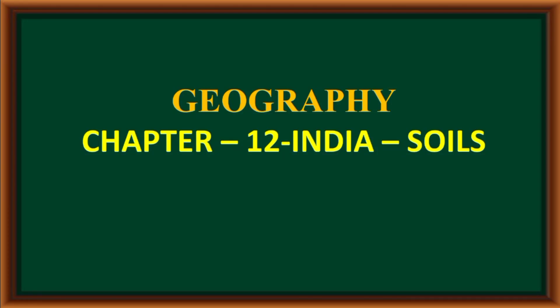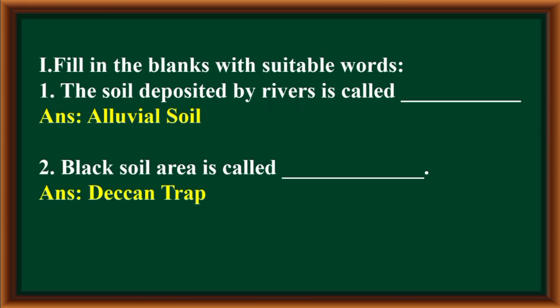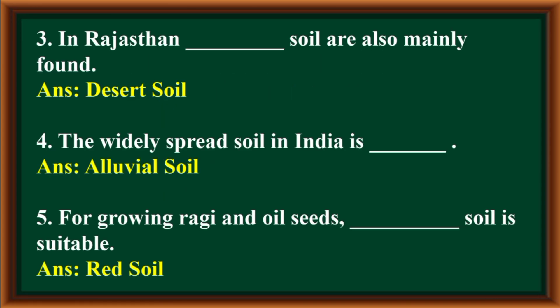Class 10 Standard Social Science Geography, Chapter 12: India Soils. Fill in the blanks with suitable words. The soil deposited by rivers is called alluvial soil. Black soil area is called Deccan trap. In Rajasthan, desert soil is mainly found. The widely spread soil in India is alluvial soil. For growing ragi and oil seeds, red soil is suitable.